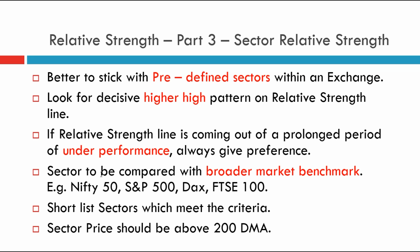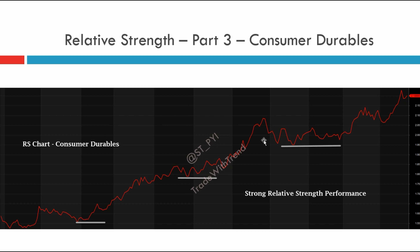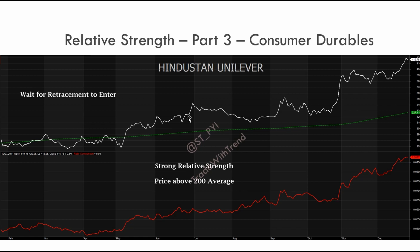This higher-high pattern was covered in detail in part two — if you missed parts one or two, please go back and watch those videos. Also, if the relative strength line has been underperforming for a long period and then starts to shape up and break out, give those sectors more importance. Sectors can be compared with respect to the broader market trend — Nifty 50 for our markets, S&P 500 for the US, DAX for Germany, FTSE 100 for the UK — depending on which market you are trading.